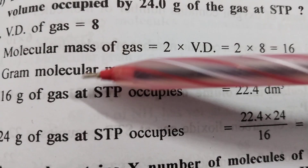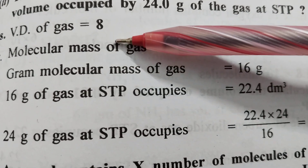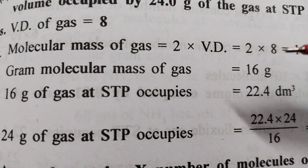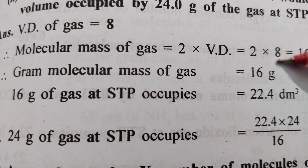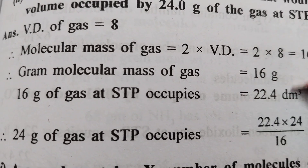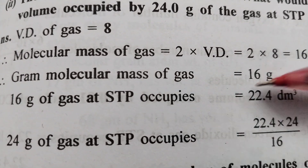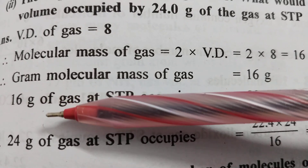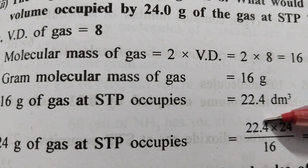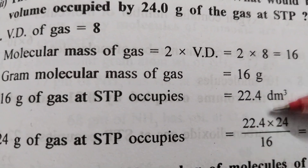The gram molecular mass of the gas is equal to 16 grams. If you know the molecular weight of any gas — if you know the molar mass — then at STP, 16 grams of the gas occupies 22.4 decimetre cube. This is the standard value.